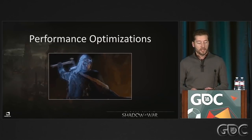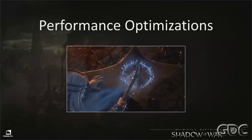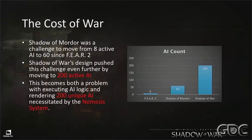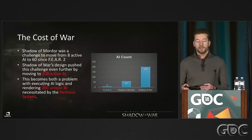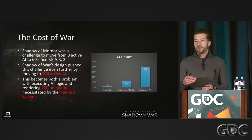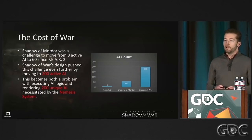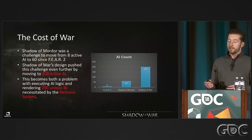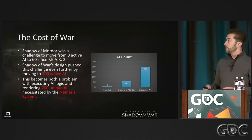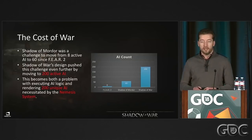Back on Shadow of Mordor, we were challenged by moving from 8 AI in F.E.A.R. to over 60 AI. There was a console transition at that time, but the hardware did not have an 8x increase in performance, even though we increased our AI count by roughly 8x.